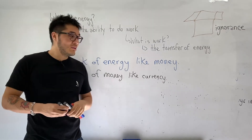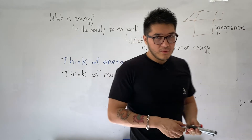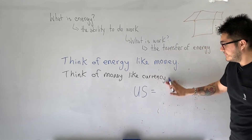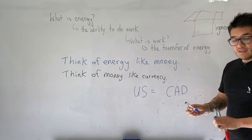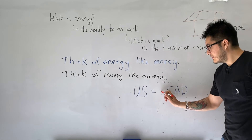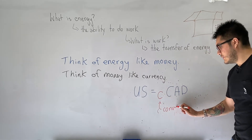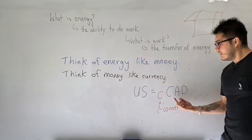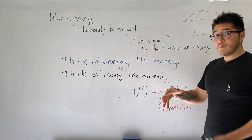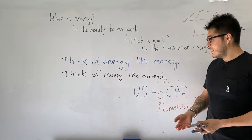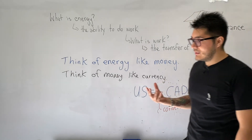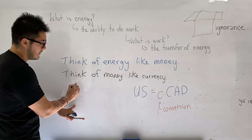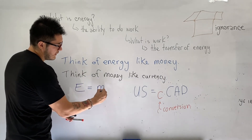So now we're going to think of money like currency. If you have the U.S. dollar and you want to change it to Canadian dollars, you need some kind of conversion factor — let's call this C for conversion. The U.S. dollar can be represented as something Canadian by this conversion factor. Money no longer represents something concrete like gold. And it turns out Einstein comes along and gives us a very famous equation.